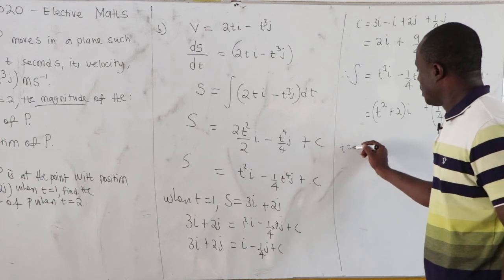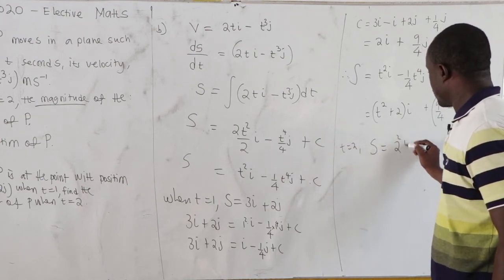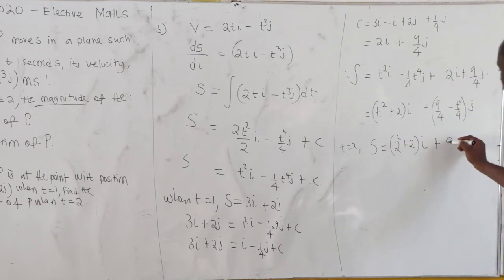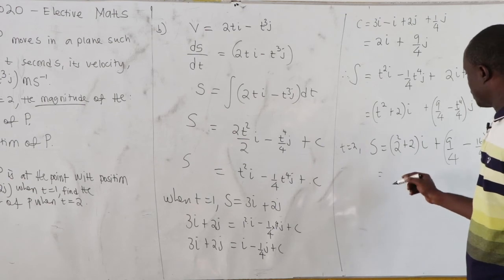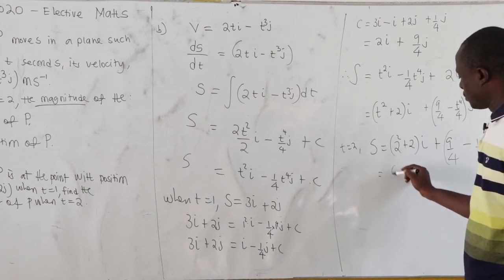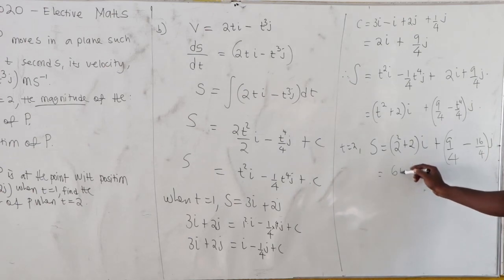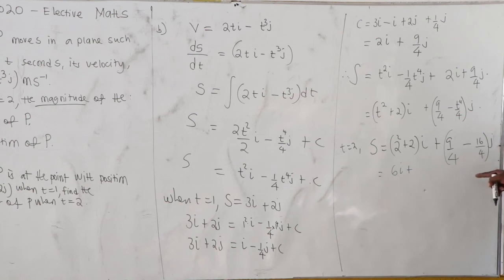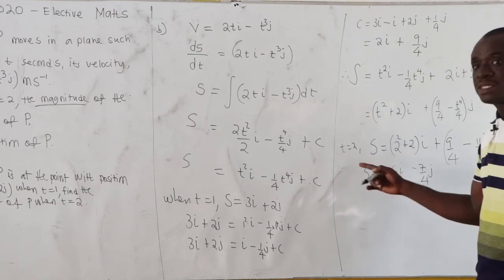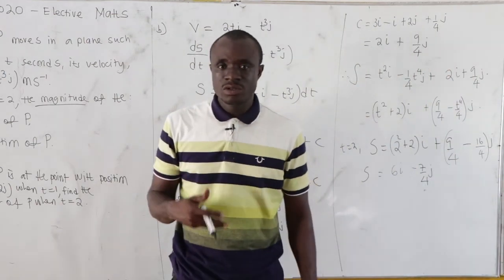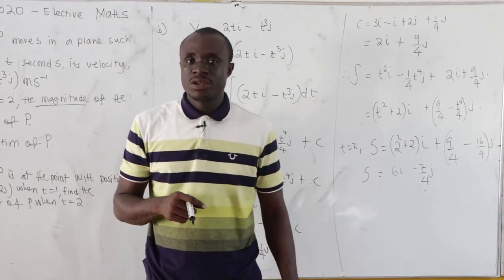When t equals 2: s becomes (2² + 2)i plus (9/4 minus 16/4)j, giving 6i plus (9 minus 16)/4 j, which is 6i minus 7/4 j. This is our displacement when t equals 2.